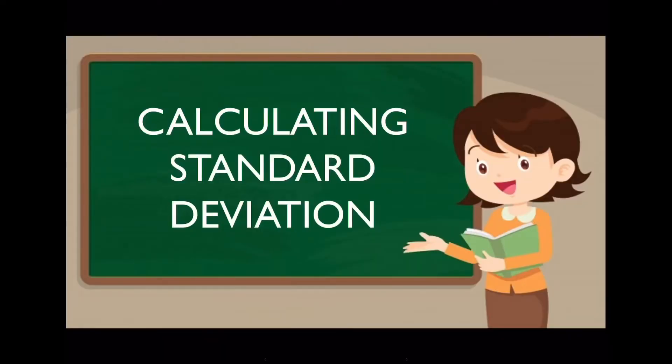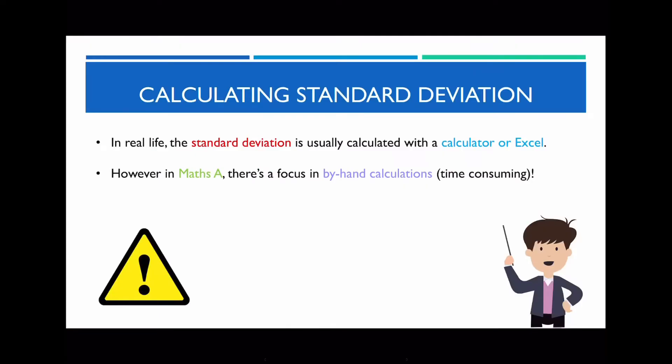What we're going to look at now is how do we actually calculate the standard deviation. In real life, in most jobs like data analysis, the standard deviation is usually calculated using a professional calculator or an Excel spreadsheet — this can be automated in less than a minute. However, in this particular course for Maths A, there is a focus on by-hand calculations, which is why I need to show you the proper formula. In this course, we're only going to calculate standard deviation for data sizes of around five or ten values.